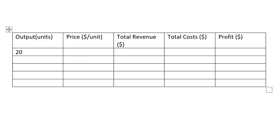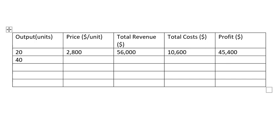When output is 20, price is 2,800, total revenue is 56,000, total cost is 10,600, and profit is 45,400. When output is 40, price is 2,600, total revenue is 104,000, total cost is 32,600, and profit is 71,400.